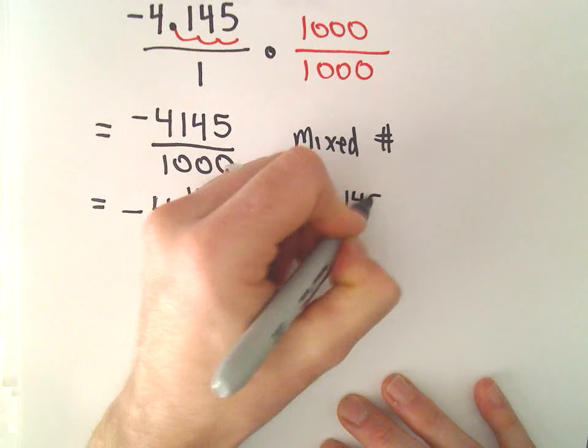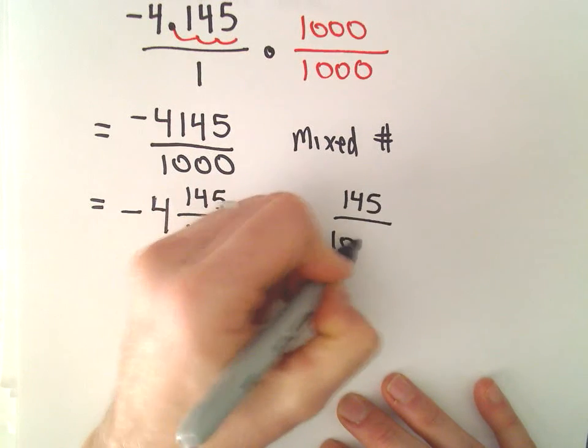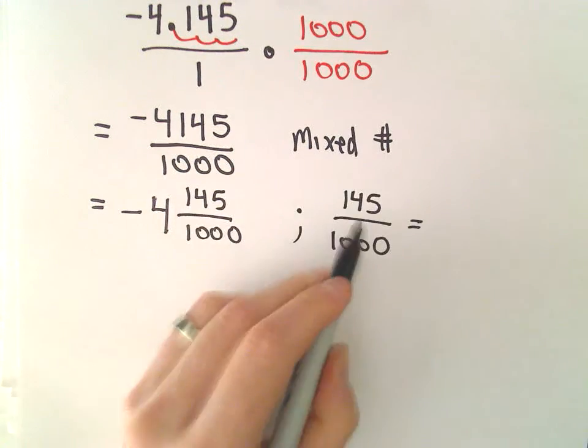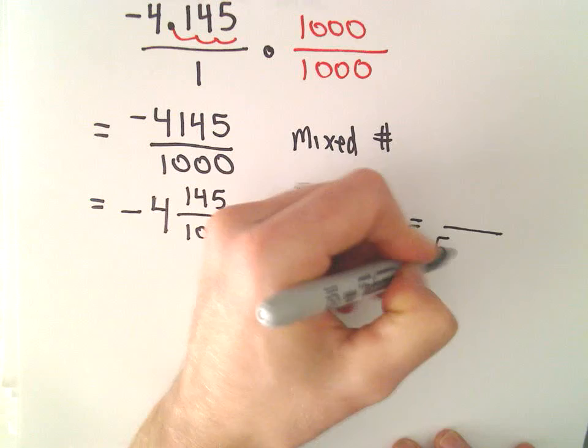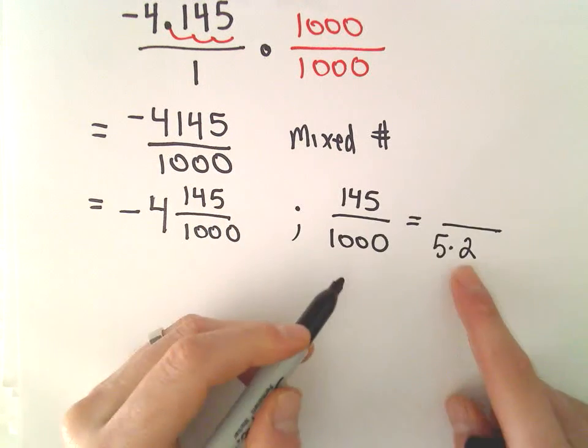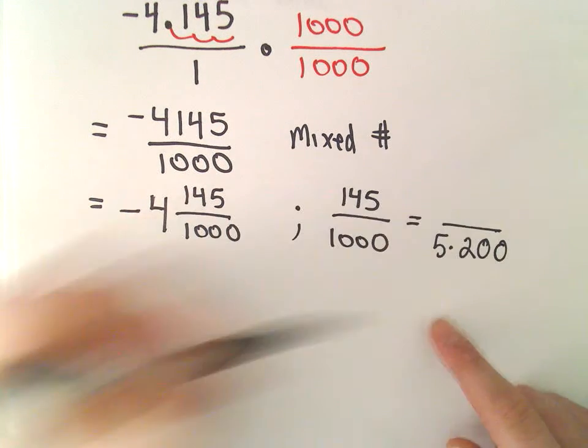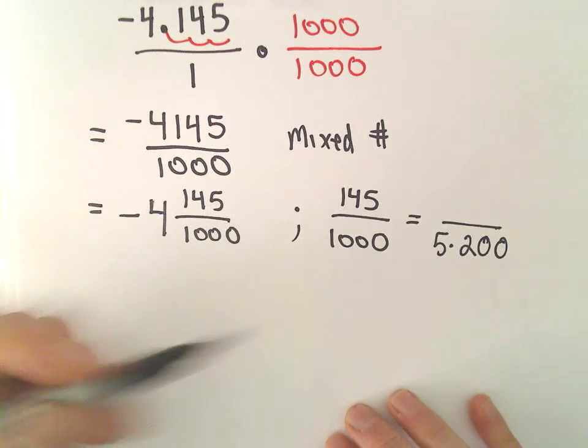Off to the side, I'm just going to reduce 145 over 1,000. I know that 5 will go into both of these numbers. 5 times 2 is 10, times 20 would be 100, times 200 will give us 1,000 in the denominator.